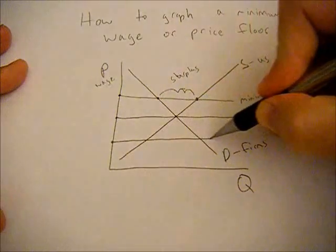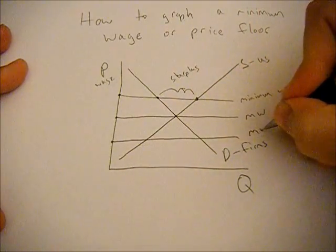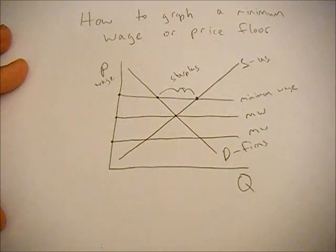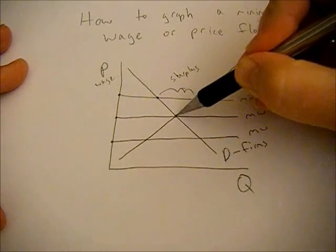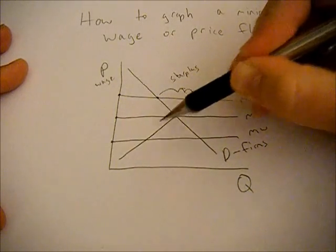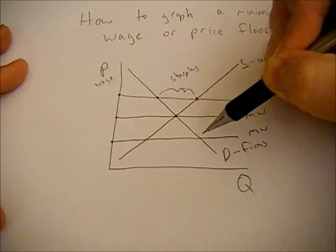We could also have a minimum wage below the equilibrium wage and the same thing would happen. The market would go to this equilibrium because the minimum wage is non-binding.